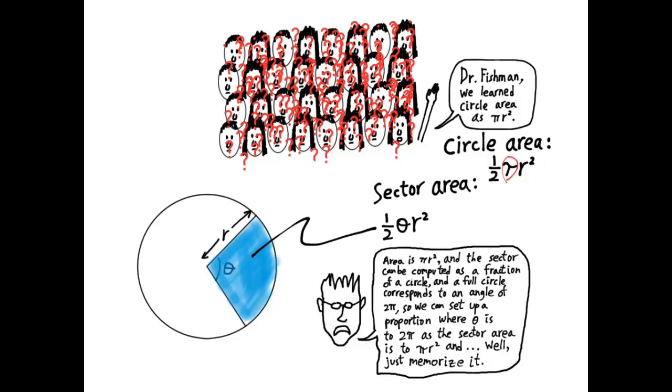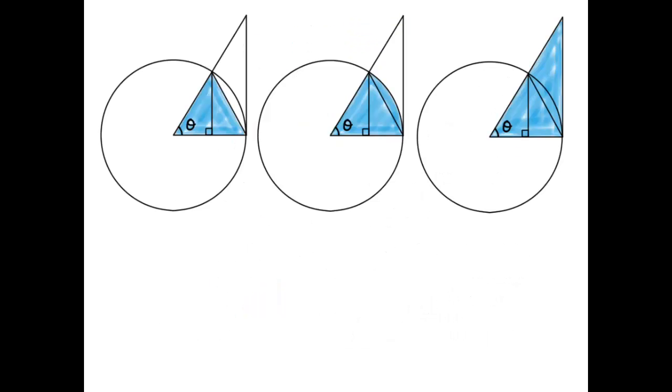Look at these three circles, and we can assume that they are unit circles. I would like you to figure out what is the area of the three blue shaded regions. Use your knowledge of triangle area and sector area, and once you pause the video and write down the area of these three blue regions.